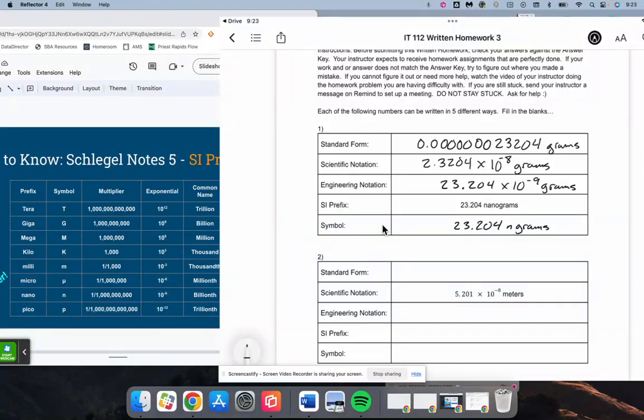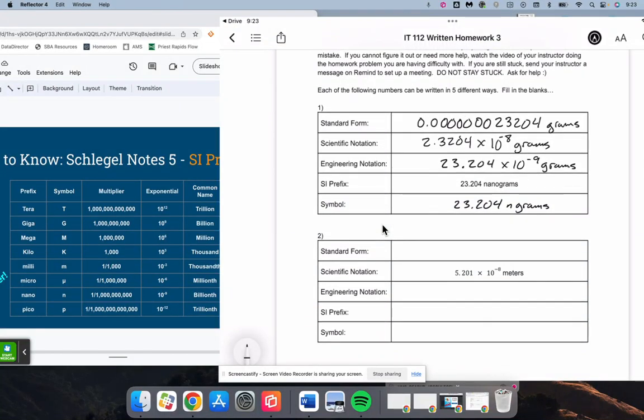Here for number two, we have 5.201 to the negative eight meters. And so for the first step here, I'm going to go ahead and go to standard notation first.